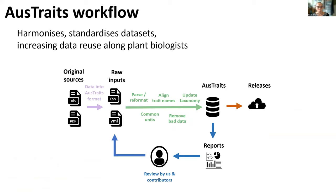Our workflow is all open source, hosted on an open GitHub repository, and it harmonizes and standardizes those datasets — first taking those original data formats sitting on each person's computer, wrangling them into the raw data inputs our script can use, then aligning trait names to a controlled vocabulary, updating taxonomy to match the Australian Plant Census which follows Darwin Core, and adding common units to create our harmonized database.